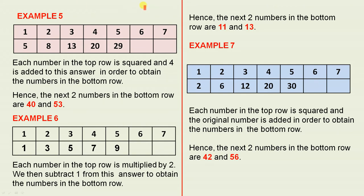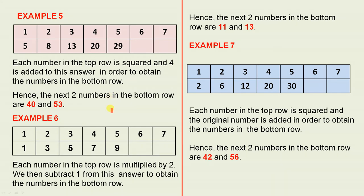Example 5: we look at the top row carefully and the first five numbers in the bottom row. Each number in the top row is squared and 4 is added to this answer in order to obtain the numbers in the bottom row. So 1 squared plus 4 gives you 5, 2 squared plus 4 gives you 8, 3 squared plus 4 gives you 13, 4 squared plus 4 gives you 20, 5 squared plus 4 gives you 29. So 6 squared plus 4 gives you 40 and 7 squared plus 4 gives you 53. Hence, the next two numbers in the bottom row are 40 and 53.